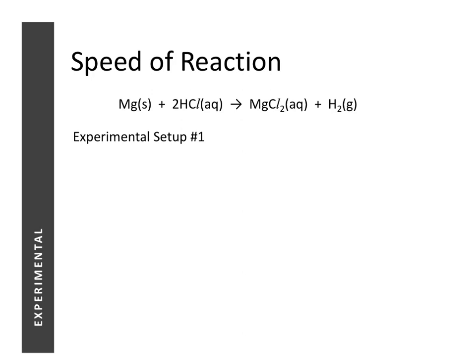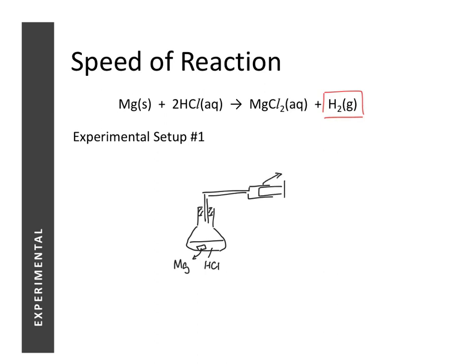Here I've shown you an equation of a reaction that produces a gas: acid plus metal gives salt and hydrogen gas. To monitor the speed of this reaction, we can use a setup with a conical flask containing hydrochloric acid and magnesium. The mouth of the conical flask is stopped with a stopper connected to a delivery tube, which leads to a gas syringe that measures the volume of gas at any point in time. We also need a stopwatch to measure time intervals.